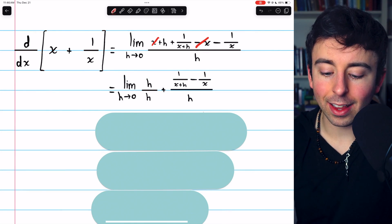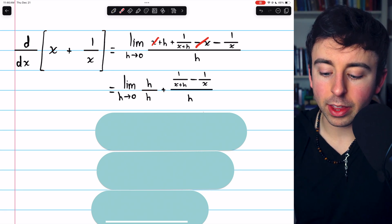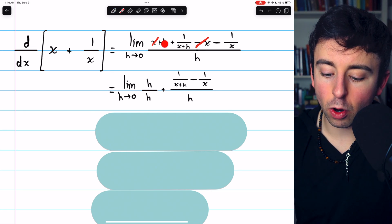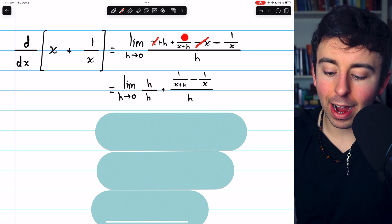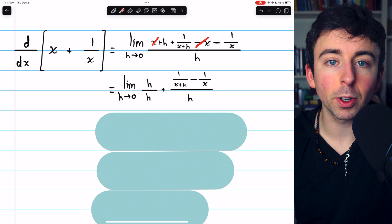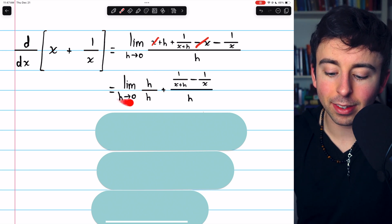Then the x and the minus x cancel out, and from there we'll separate the fraction. We have h over h, which we will write on its own, plus 1 over x plus h minus 1 over x over h, which we write separately. So we now have this limit statement.